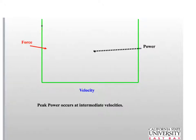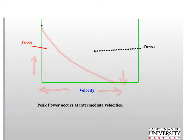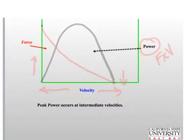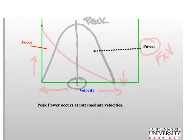Let's look at the force-velocity curve from concentric contractions. You should recall this graph: at low velocities you have high forces, and at high velocities there are low forces. If we take power, which is force times velocity, this is what our power curve will look like, and your peak power occurs right around mid-velocity.